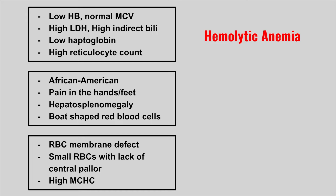Next, we're going to have a patient who is African American, they get pain in the hands and feet, hepatosplenomegaly, and boat-shaped red blood cells on smear. This is sickle cell disease. Remember that initially the spleen gets larger, but over time you get autosplenectomy.